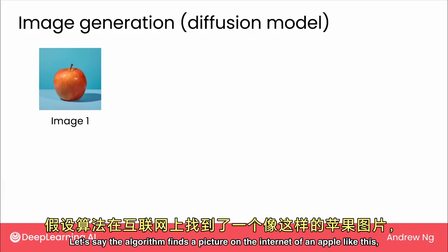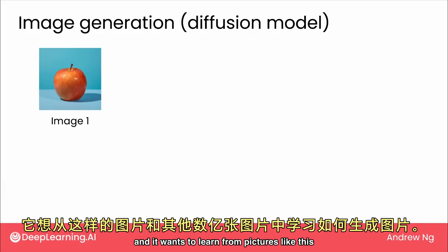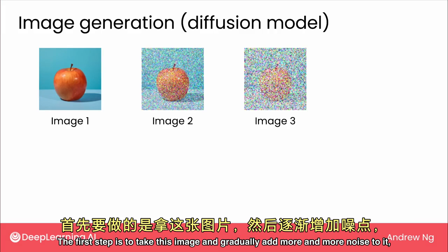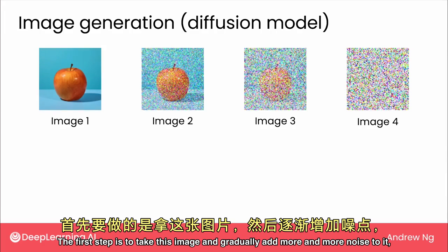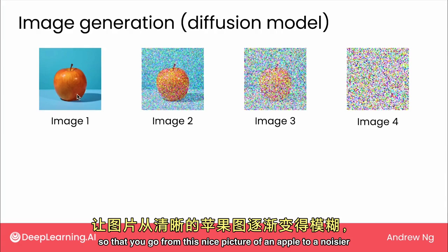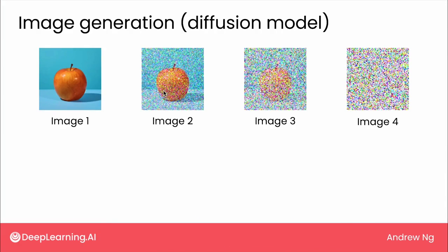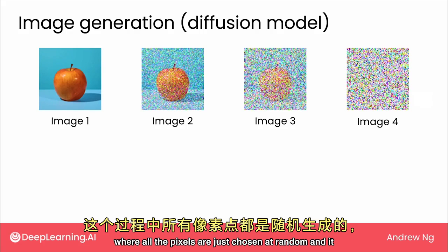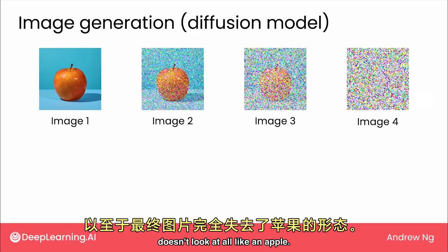Let's say the algorithm finds a picture on the internet of an apple like this, and it wants to learn from pictures like this and hundreds of millions of others on how to generate images. The first step is to take this image and gradually add more and more noise to it, so that you go from this nice picture of an apple to a noisier, to an even noisier, to finally a picture that just looks like pure noise — where all the pixels are just chosen at random and it doesn't look at all like an apple.